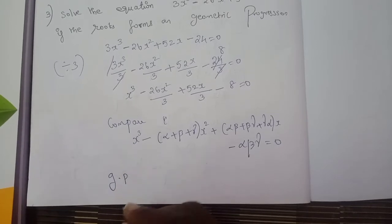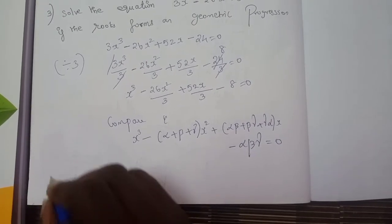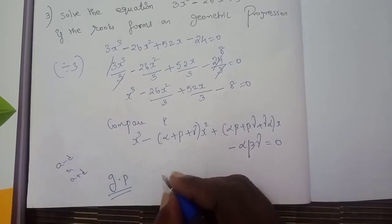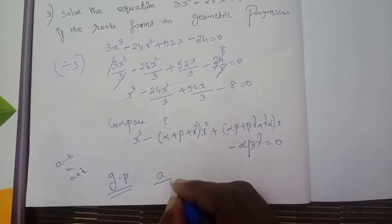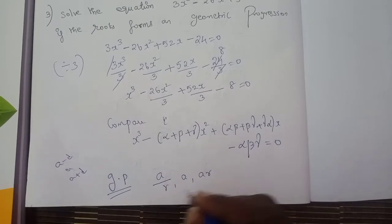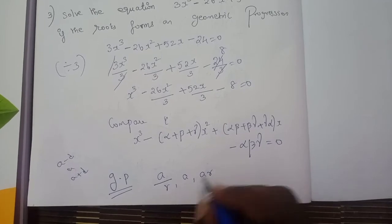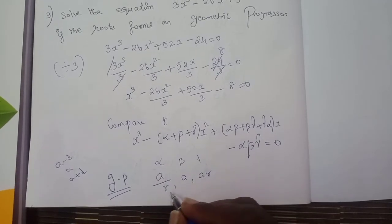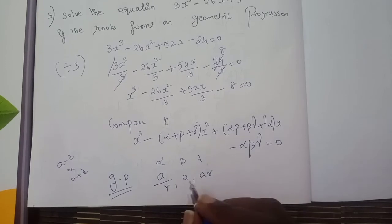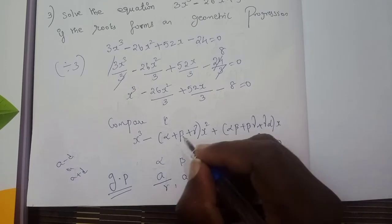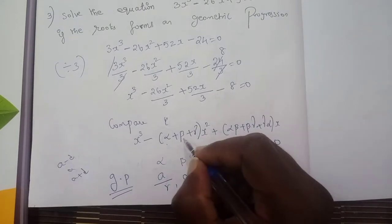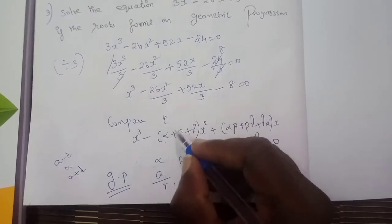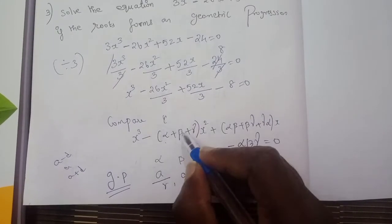Since the roots are in geometric progression, we take the roots as a/r, a, and ar. Comparing, we get α + β + γ = 26/3.